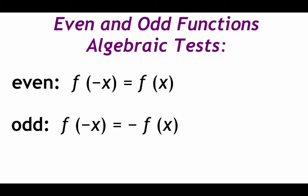Here are those algebraic tests. In order to test if a function is even, this is the same exact thing as checking if it has y-axis symmetry. We take our function, we plug in a negative x, and if we get back the original function, it means our function is even. For odd, this is our origin symmetry test. If we plug in a negative x into our function and we get back the opposite of our original function, it means that our function is odd.